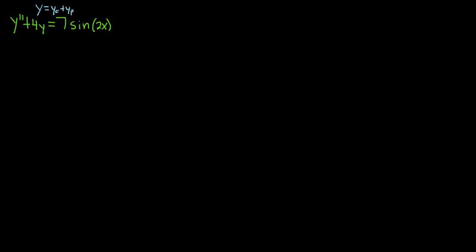We'll start first by finding Y sub C. To find Y sub C, we assume that the differential equation is equal to 0, so we start by finding what's called the characteristic equation. Because we have a second derivative, we write down M squared plus, and then 4Y, that just becomes 4 — that's really the zeroth derivative, so it's M to the 0. And this is equal to 0.